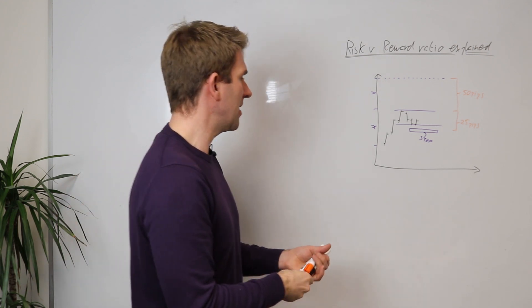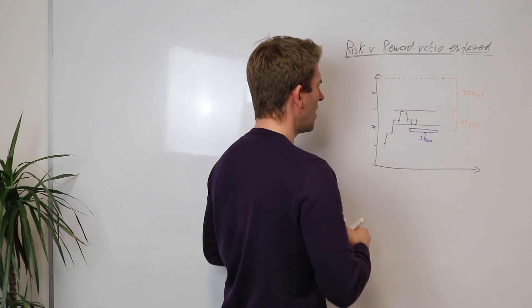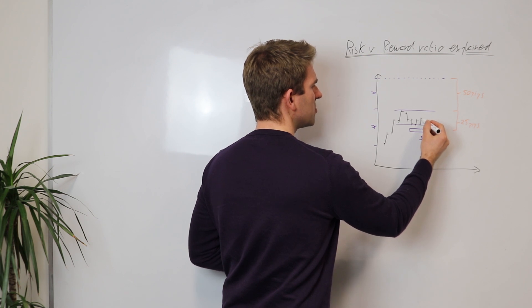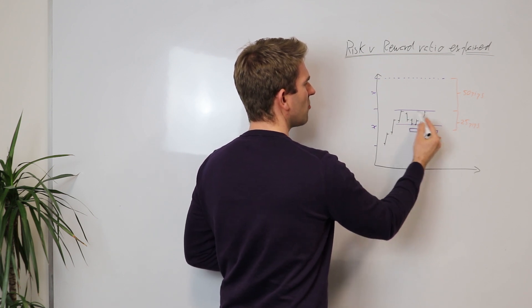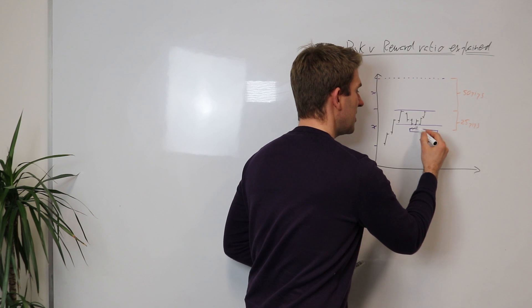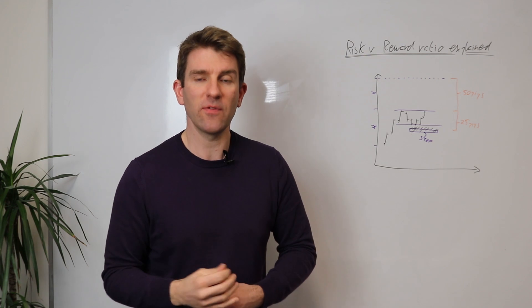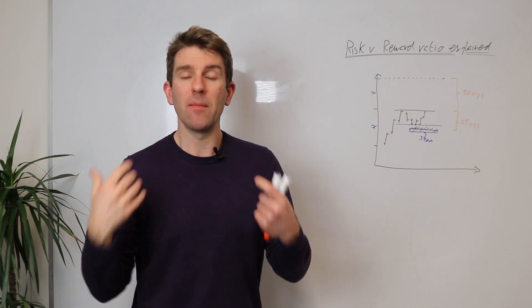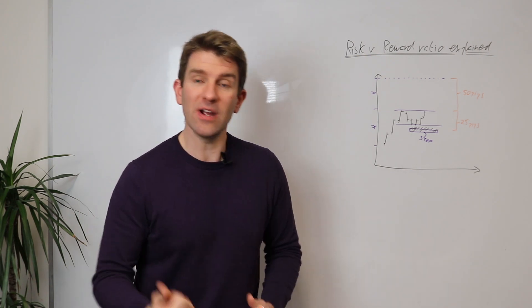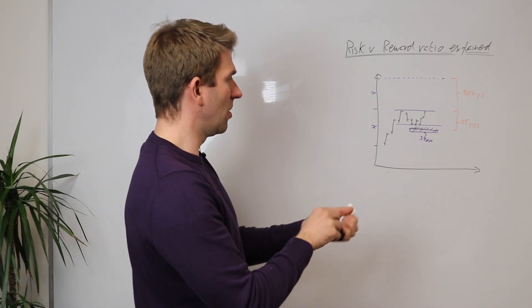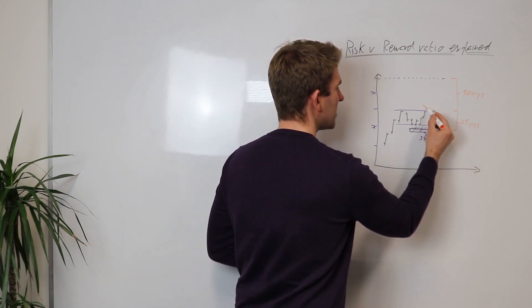Imagine this example here — you've got a bit of a drive higher, the market's consolidated a bit, and your strategy is: we've found some support here, so I'm going to buy a break of that prior high. I've got a one-two-three reversal pattern, and I'm going to put a stop just below the low. The structure of the trade suggests we're going higher, so I'm going to go long, with my stop here.